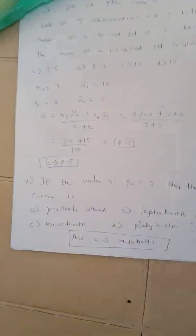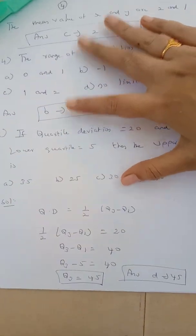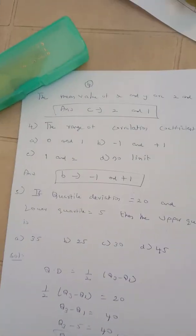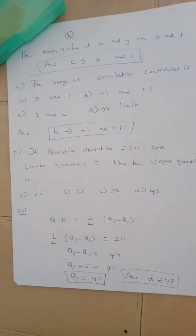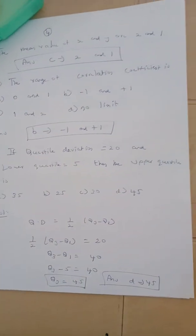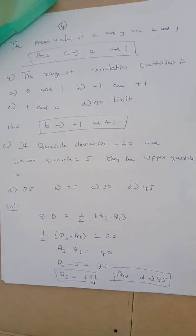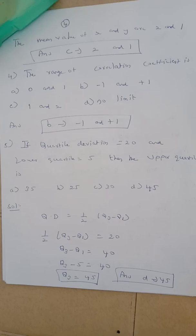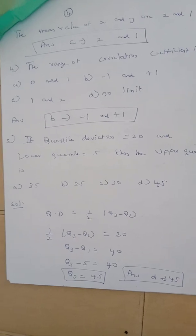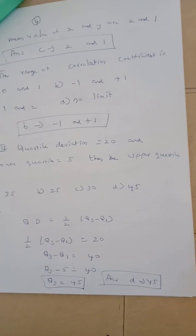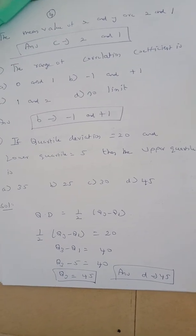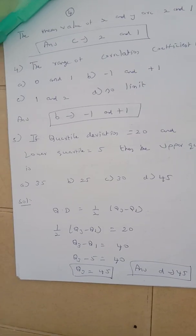Question number 5. The range of correlation coefficient is. The correct answer is option B, minus 1 and plus 1. Correlation coefficient always lies between minus 1 and plus 1.